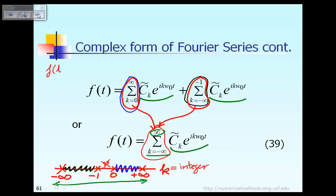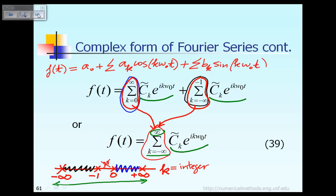Equation 39 says that instead of expressing the periodic function f(t) using Fourier series coefficients with combinations of cosine and sine — that is, a₀ plus the summation of a_k cosine(Kω₀t) plus the summation of b_k sine(Kω₀t) — we can express the same periodic function f(t) in complex exponential form as indicated in equation 39.